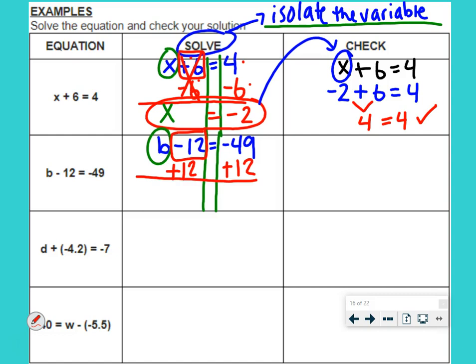Negative 12 plus 12 is 0. It goes away. That's our goal. We want to get rid of it. So, then, b is all by itself. That's our goal. B equals, and then we just have to do some addition. Negative 49 plus 12 is negative 37.